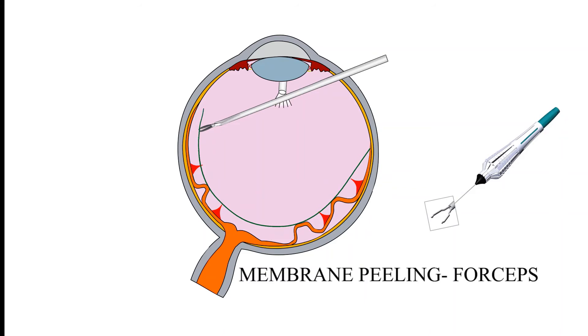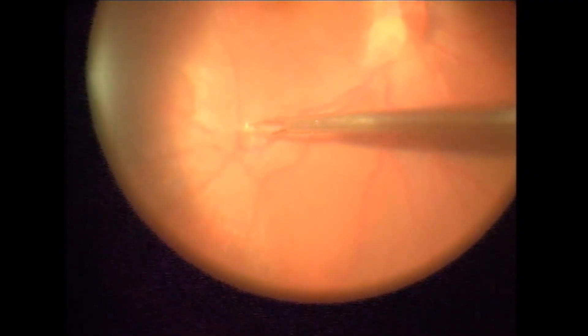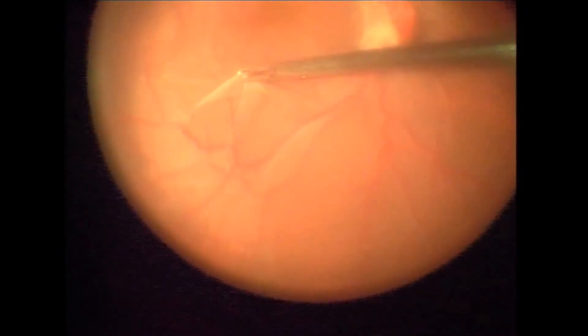Fibrovascular membrane can be peeled off the retina using membrane peeling forceps or using vitrector by modulating the suction. Membrane peeling from the posterior pole is difficult in PDR due to tight attachment to the retina and risk of bleed.